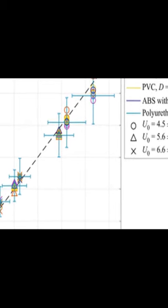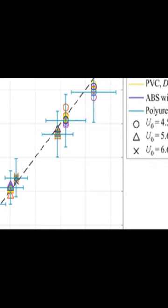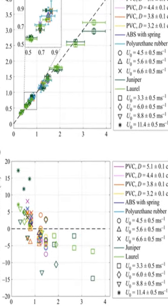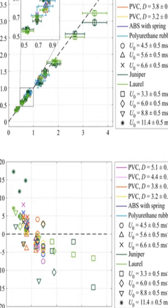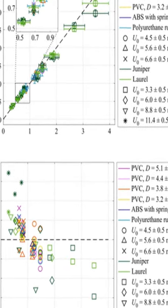The visual measurements agreed with ground truth anemometer measurements for various cylinder and tree configurations. This suggests a method for non-invasive quantitative flow velocity measurement without having to directly observe or instrument the flow.